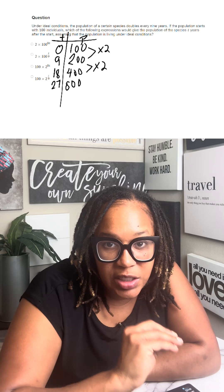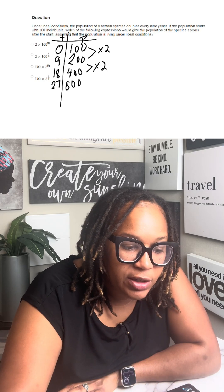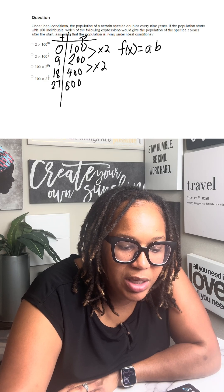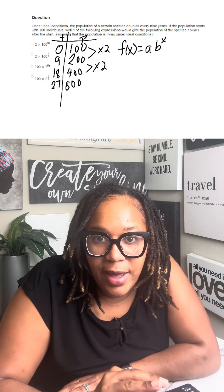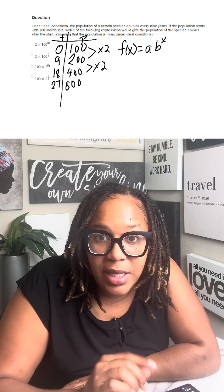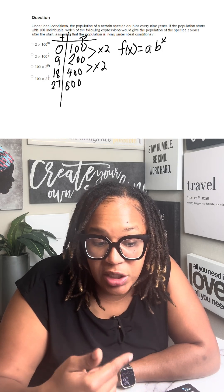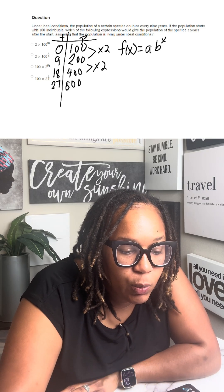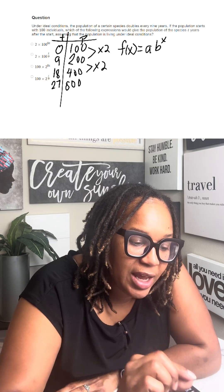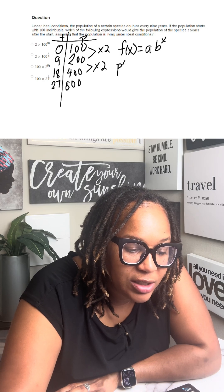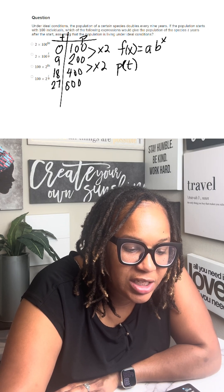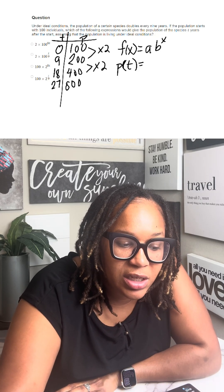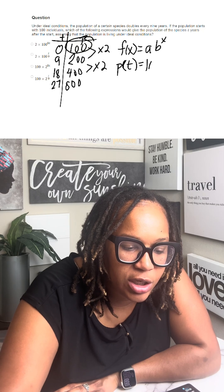This lets me know that this is an exponential function. And the standard formula for an exponential function is F(x) = A · B^x, where A is the initial amount and B is the amount that it's changing by — that's the growth factor. In this case, we don't have X, we have T. So we would say P(T), P standing for population, T standing for time in years, is going to equal A, which is the initial amount — how much you started with — which is 100.